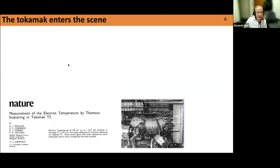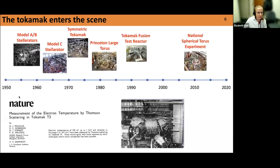Around this time, the tokamak started to have early success — measurements from the Soviets showed they had achieved high temperatures in their tokamak experiment. A lot of energy in the magnetic confinement community began to focus on the tokamak instead of the stellarator because of this early success. At this point, the Princeton Model C stellarator was converted into a tokamak experiment. So in the 1950s and mid-1960s there were several stellarator experiments at Princeton, but then they transitioned largely into tokamak experiments. There's now a resurgence of interest in the stellarator concept, which I'll discuss toward the end of my talk.